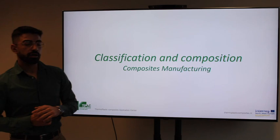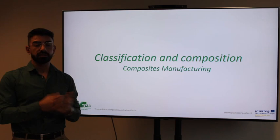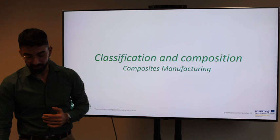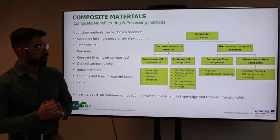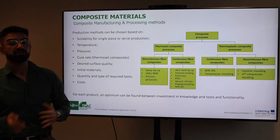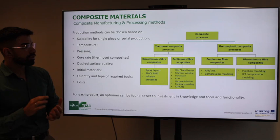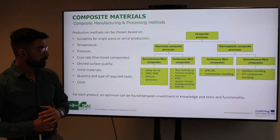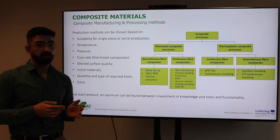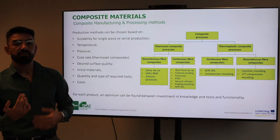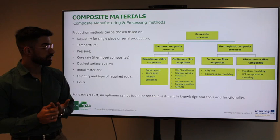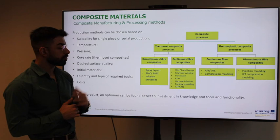After finishing the reinforcement and matrix section, we move to composite manufacturing and processing. Composite processes can be differentiated according to their matrix — thermosets or thermoplastics — and further subdivided by fiber type. For thermoset composites with discontinuous fibers, methods like spray layup can be used; for continuous fiber thermosets, pultrusion or filament winding are typical. For thermoplastic composites, the most typical processes are compression molding or injection molding.